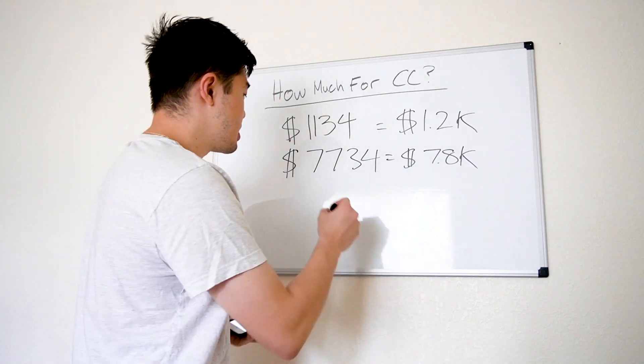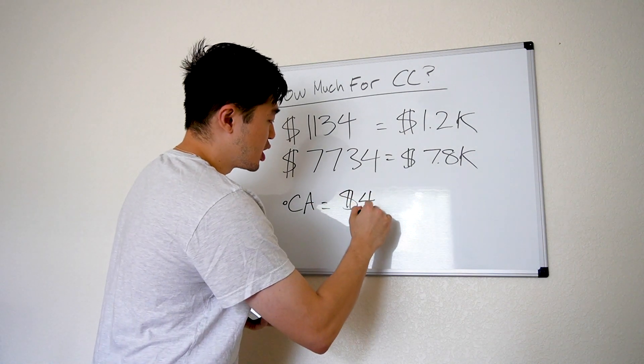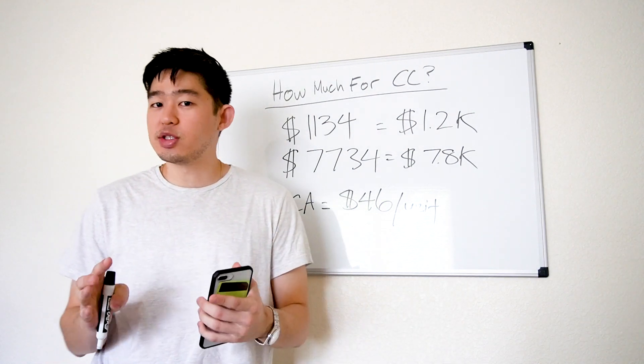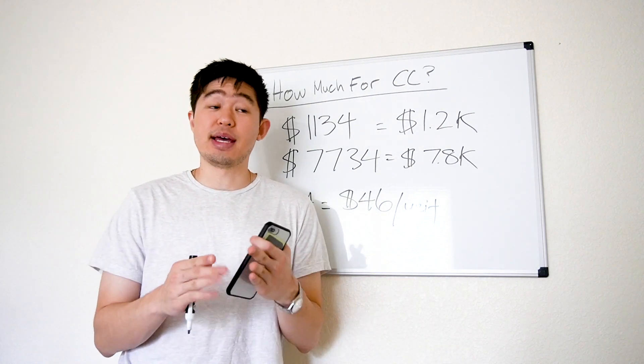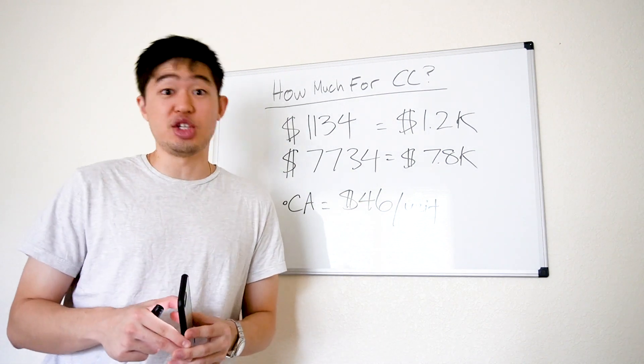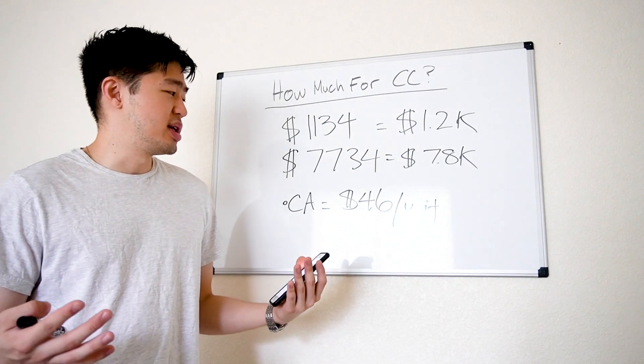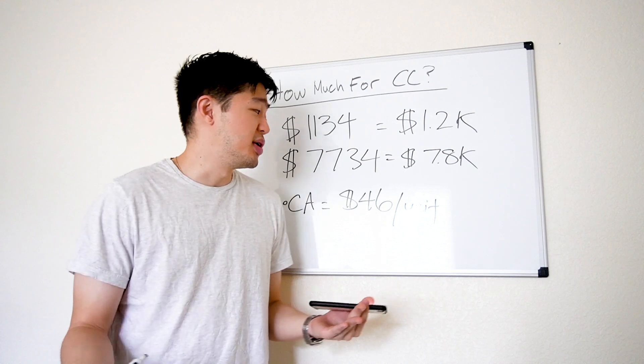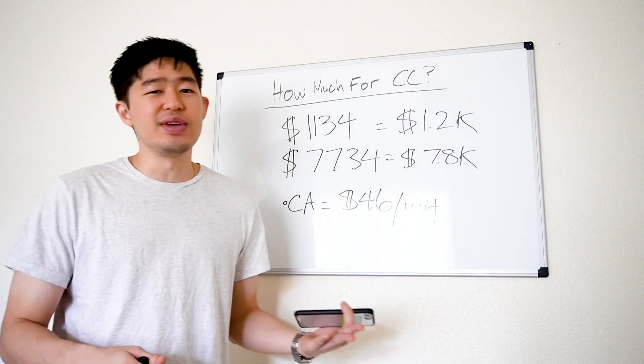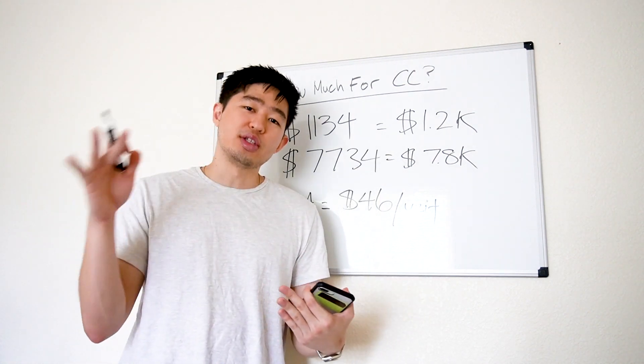Actually on the website, on my community college website, it says that for California residents it's $46 per unit. For those of you who aren't too familiar with the tuition prices and how much it costs to attend college, $46 per unit is extremely cheap. Back when my parents went to college, it was probably $10 per unit. But we're not living in the 70s or 80s, we're living in 2020.